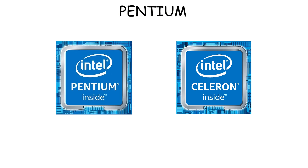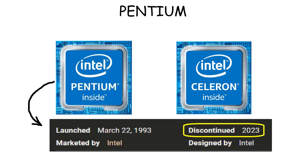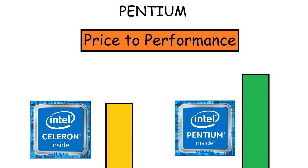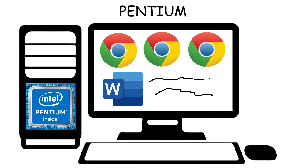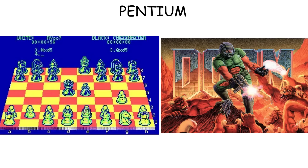Intel Pentium was basically the same as Intel Celeron — both were weak and got discontinued in 2023. The difference is Pentium was slightly stronger and more expensive than Celeron, so you could open more browser tabs or run simple office apps more smoothly. It could even handle some games like chess and the classic Doom game.